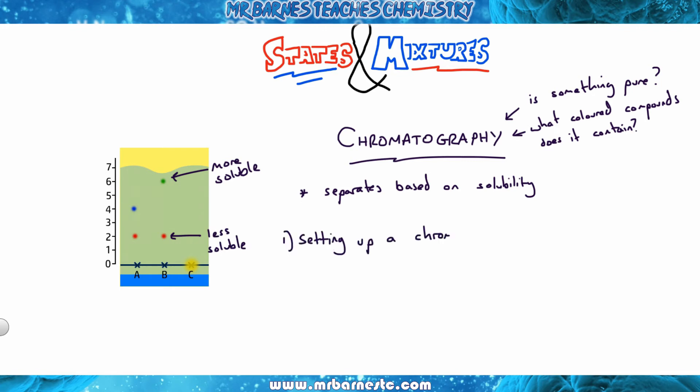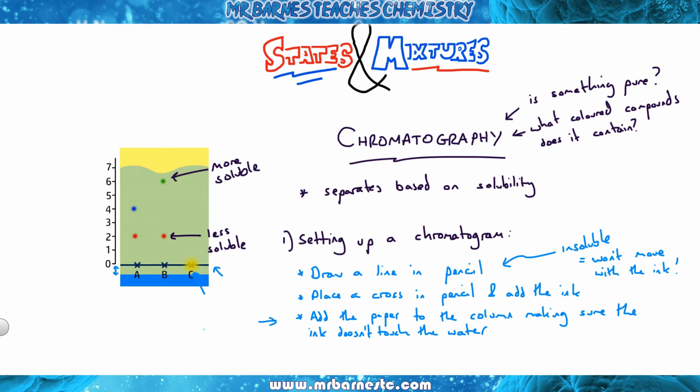You need to be able to tell me how to set up a chromatogram. Number one, you draw a line in pencil. The reason it's got to be in pencil is because it's insoluble and won't move with the ink up the paper. Number two, place a cross in pencil and add your ink on. Number three, add the paper to your chromatography column and make sure the ink does not touch the water. If it touches the water, it will wash away and won't move up the paper. Finally, let your mobile phase, which is the water, reach the top or close to the top of the paper, which is your stationary phase, and then remove it.